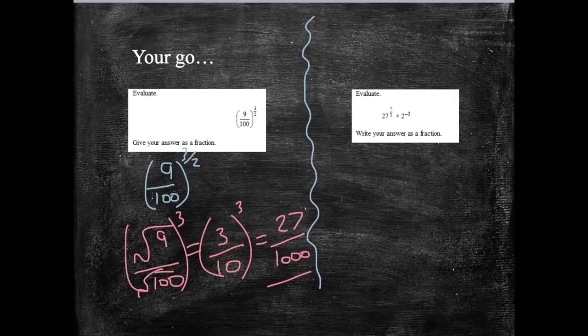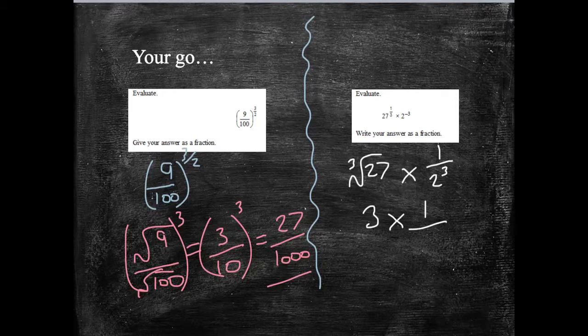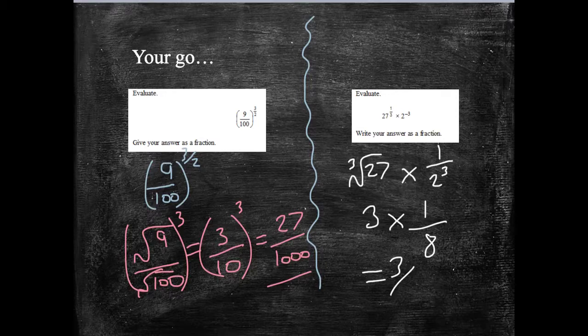And the second one, we've got 27 to the third multiplied by 2 to the minus 3. Well, 27 to the third is the same as the cubed root of 27, multiplied by 2 to the minus 3. That's 1 over 2 cubed. The cubed root of 27 is 3, multiplied by 1 over 8, which gives me an answer of 3 eighths. Hopefully you got those right. If not, go back, look at your notes on laws of indices, and see if you can see where I got these answers from.